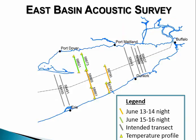In the Eastern Basin, six transects were conducted, though the remaining six intended transects were not successfully collected. Data from the Eastern Basin surveys from 2015 and 2014 analysis is not yet finished, but should be done in the coming months.